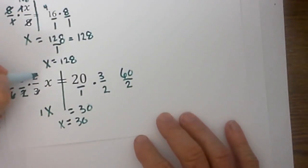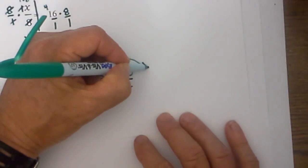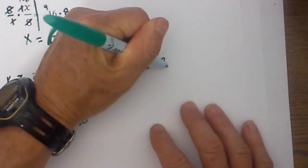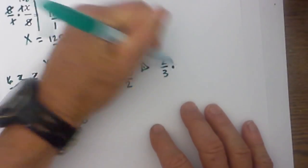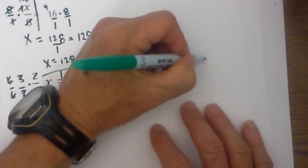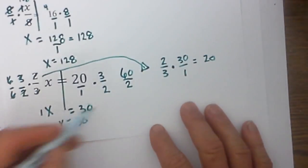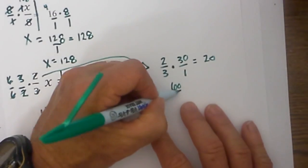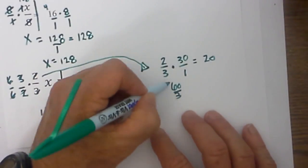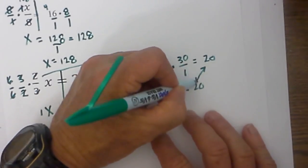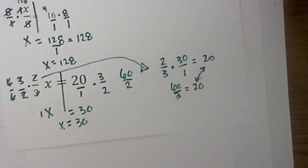I am going to move this over here. I am going to move this 2/3 because it is getting a little messy there. So we have 2/3 times 30 over 1 is equal to 20, 2 times 3 is 60, 3 times 1 is 3, 3 will go into 60 20 times. So they are equal and we checked our work. Our answer is correct. I hope this helps.